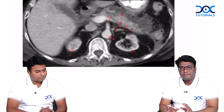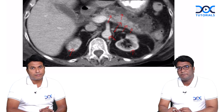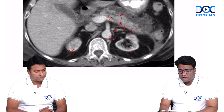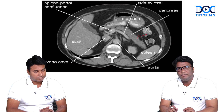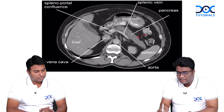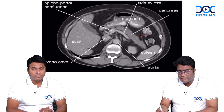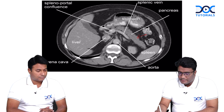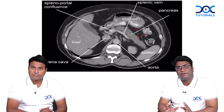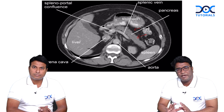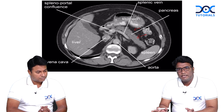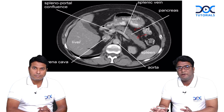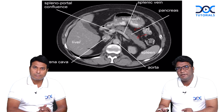Now let's try to understand how a normal pancreas appears. If you see a normal pancreas, it would be very homogeneously enhancing with small lobulations that you can see. The peripancreatic fat will not show any kind of inflammation — no peripancreatic fat stranding, no collections noted. This is how a normal pancreas would appear on a CECT image.